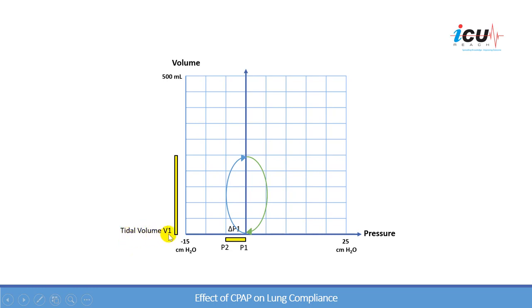This tidal volume is 250 ml of air into the lung. So in this case, a change in pressure of minus 5 centimeters of water resulted in a tidal volume of 250 ml. In exhalation, the pressure goes back to 0 and the tidal volume would go down gradually back to 0, or to the functional residual capacity of the lung.